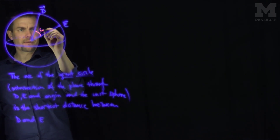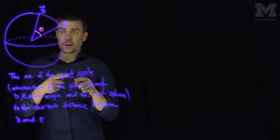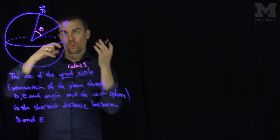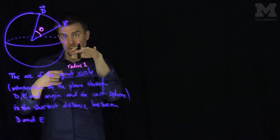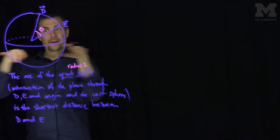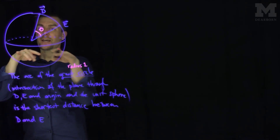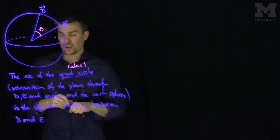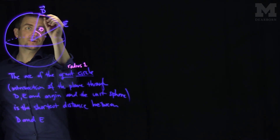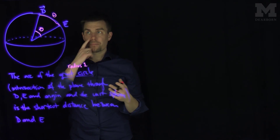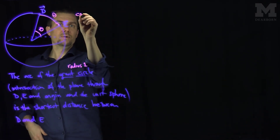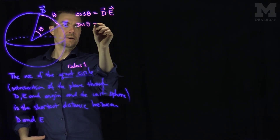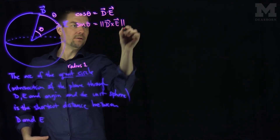If this angle is theta, and we're on the great circle, the great circle has radius one — the equator is one such great circle, and rotating it shows all great circles have radius one. So this arc has length theta. We can compute theta: the cosine of theta is vector D dot vector E, and the sine of theta is the length of D cross E, the length of the cross product.